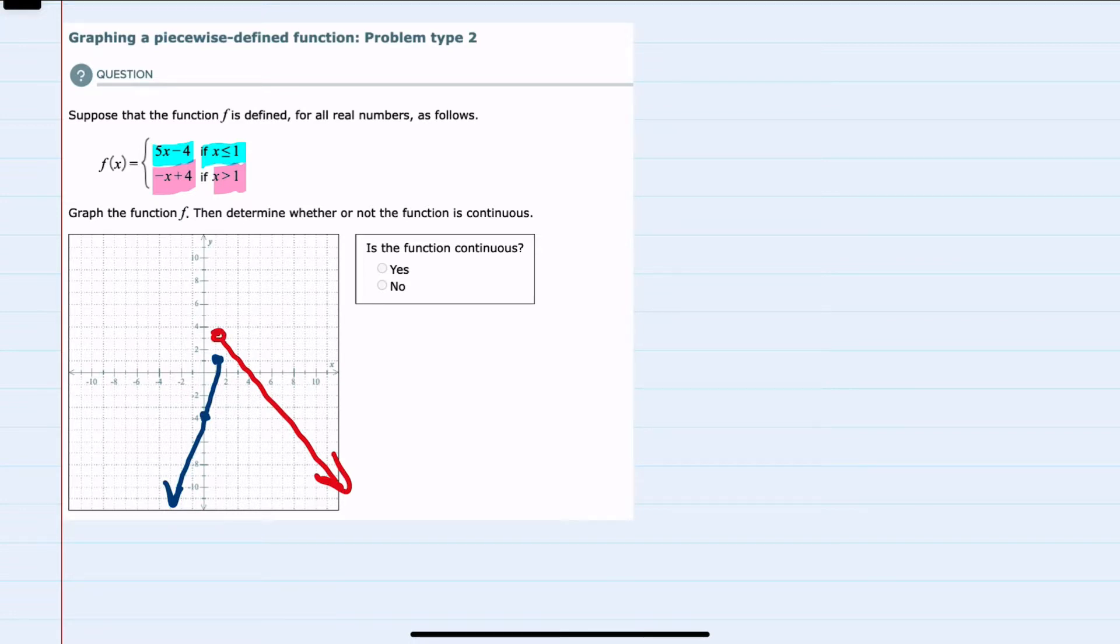So I have graphed both of the pieces, and we are asked the question, is the function continuous? So moving from left to right, it does not continue. There's a gap between these two, so no, it is not continuous.